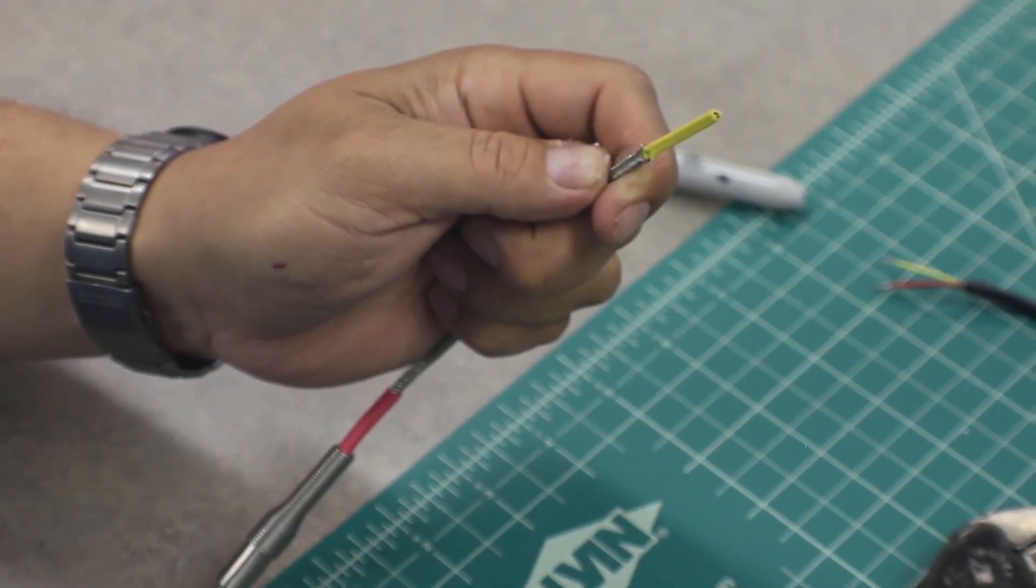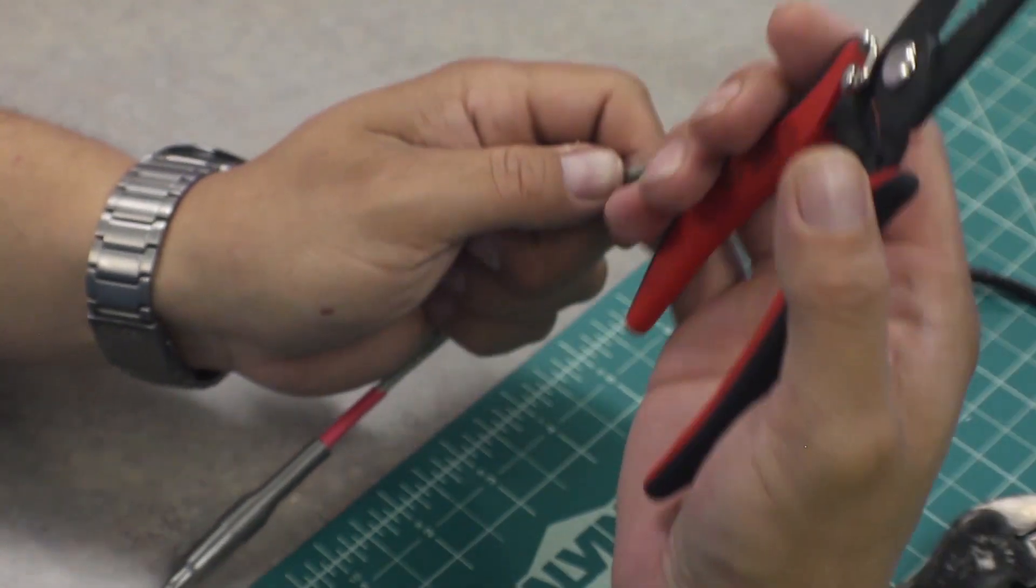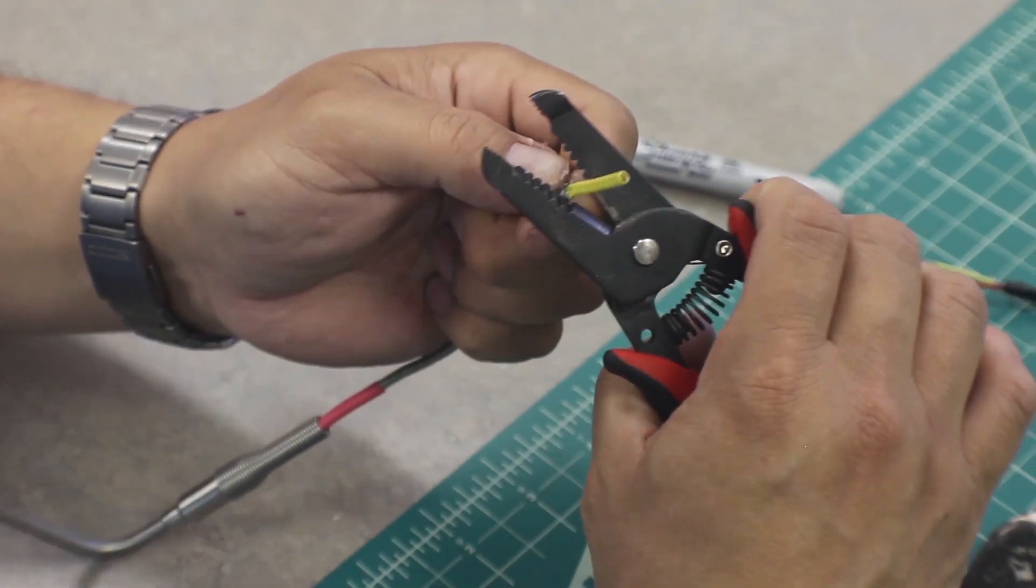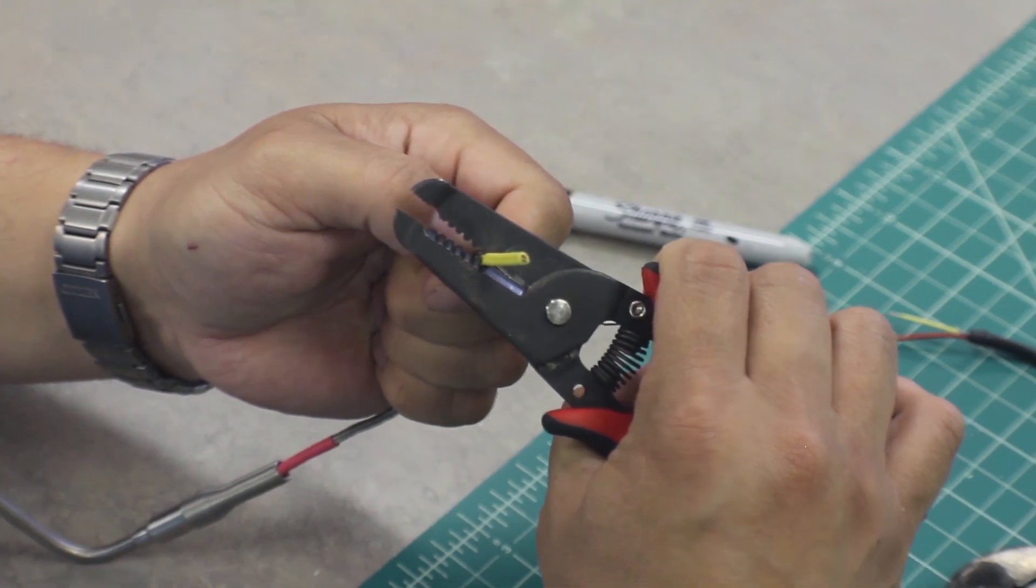Once the stainless steel outer braiding is removed, the yellow Teflon outer jacket is exposed. This outer jacket can be removed using a pair of wire strippers.